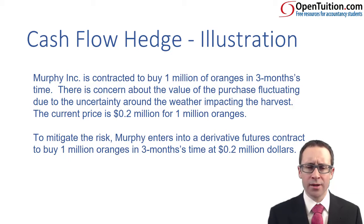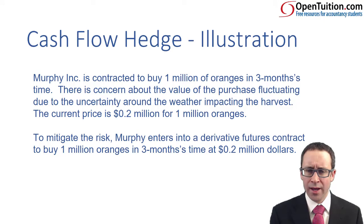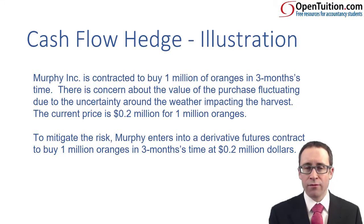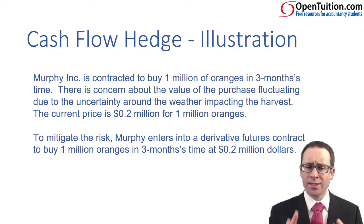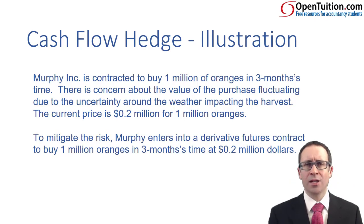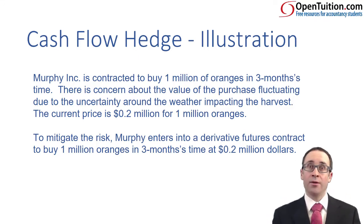There's our example from earlier — Murphy buys a million oranges in three months' time. We're worried about the value fluctuating. The fear is of a rise in price. That's what we are worried about — having to pay more for the oranges than what they're worth now.